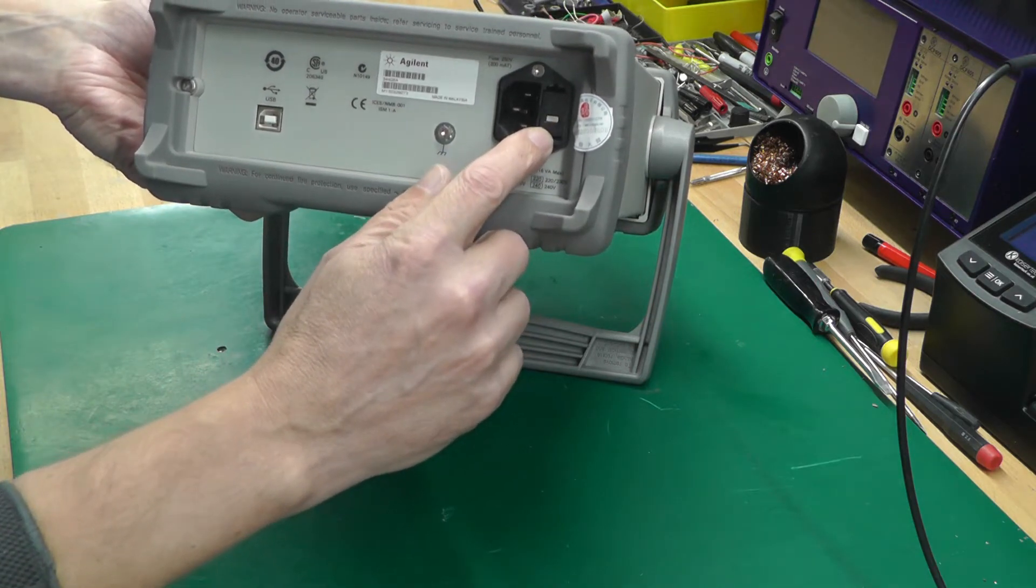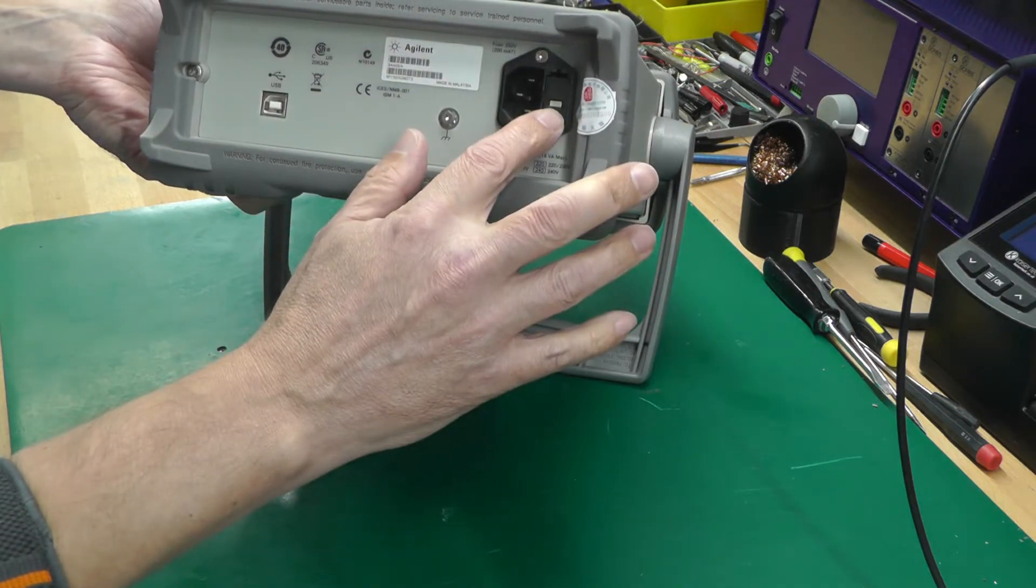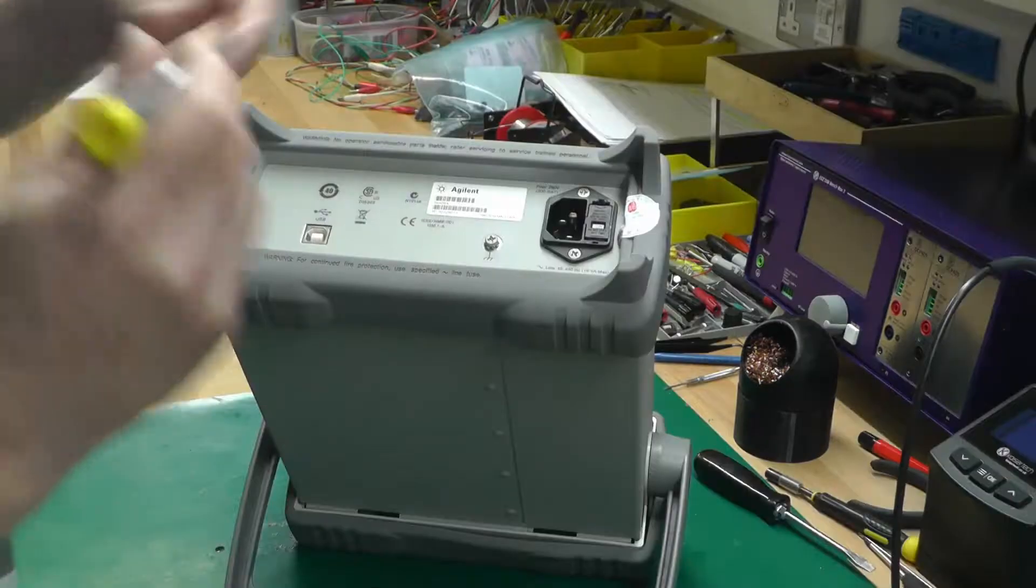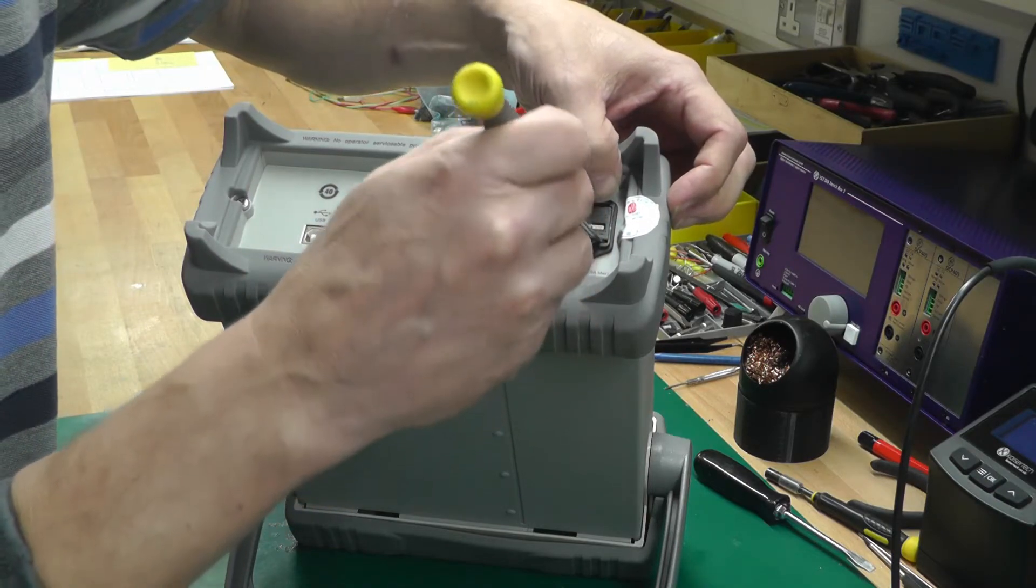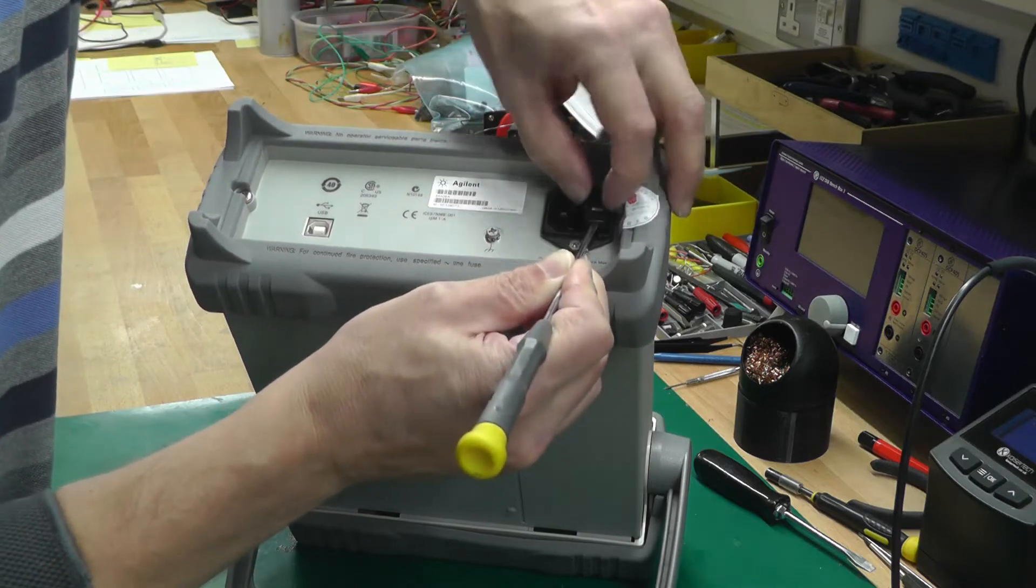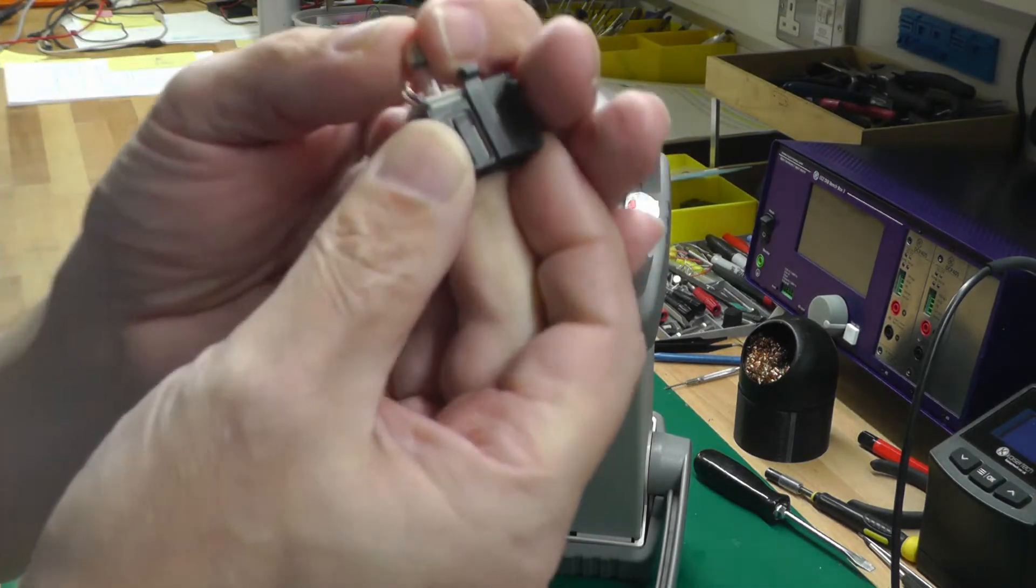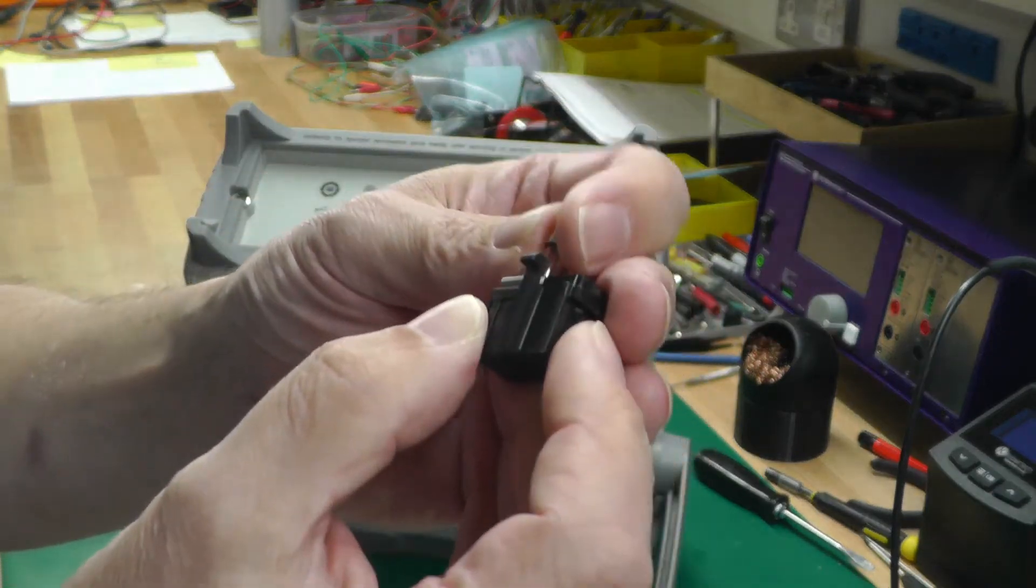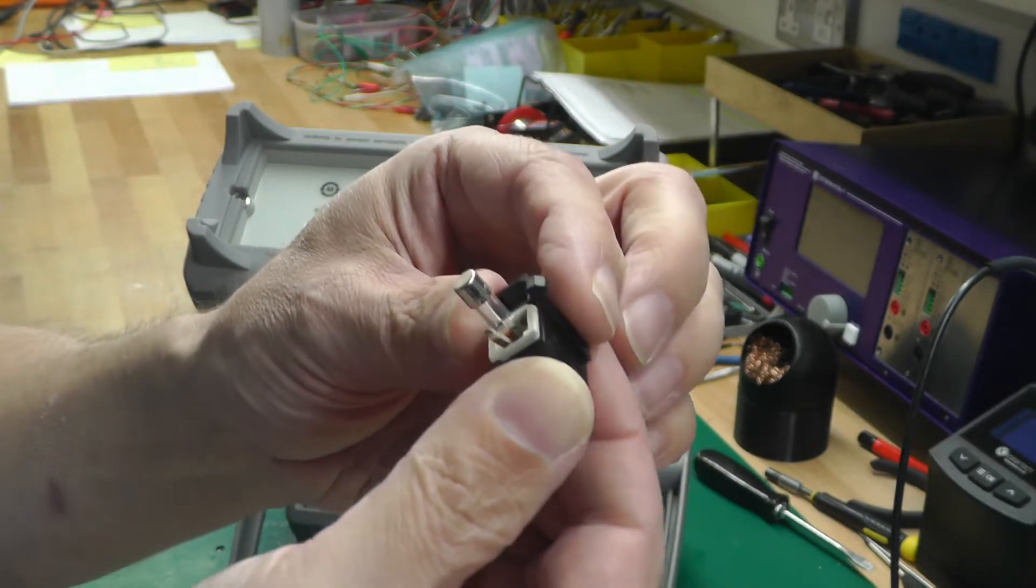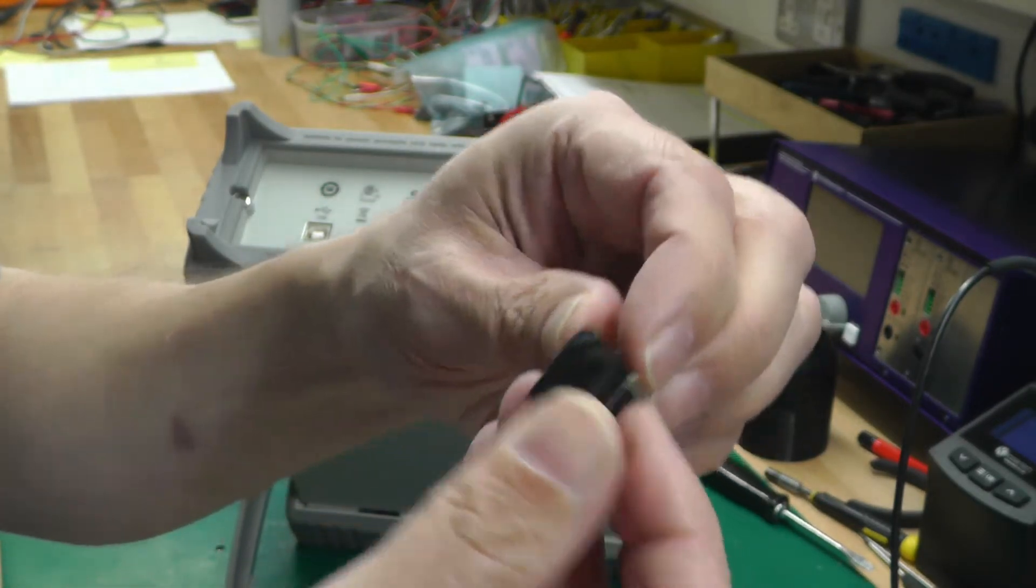It's currently set for 220 volts, so let's take that out, then turn it around and get it set for 240 volts before I do anything. Okay, there we go. I'll have a quick look at the fuse whilst we're in here - the fuse looks to be intact. The way these line selectors work is you just pull out the gray part here.